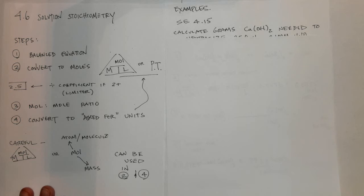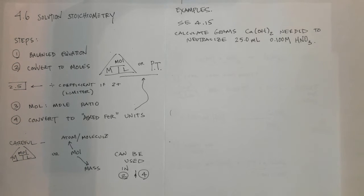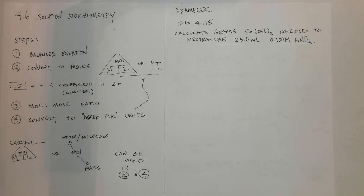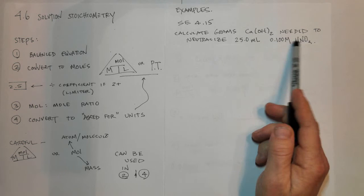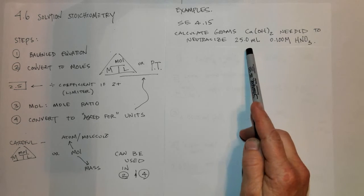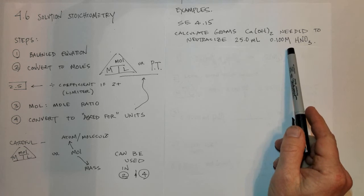Some of the examples go quite quickly and the very last one takes a long time. The first example is from sample exercise 14.15 in the Brown-LeMay 13th edition textbook: calculate the grams of calcium hydroxide needed to neutralize 25 milliliters of 0.1 molar HNO₃.